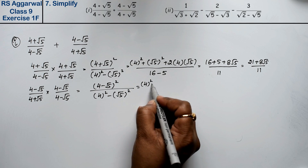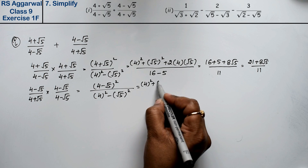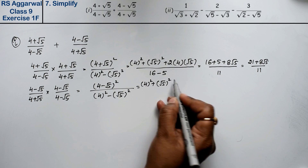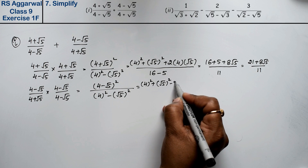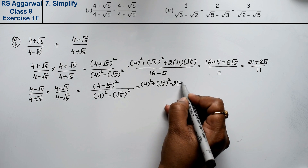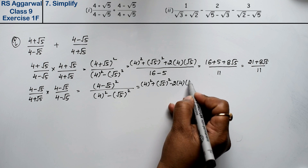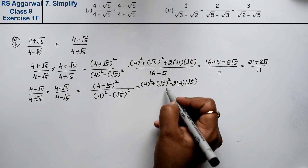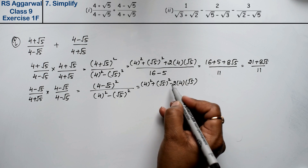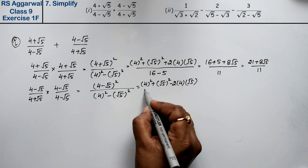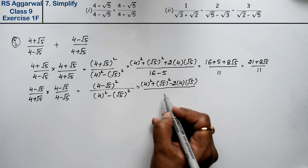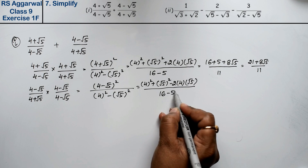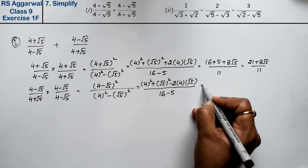The second fraction's numerator expands as a² + b² - 2ab. So: (4 - √5)² = 16 + 5 - 8√5 = 21 - 8√5, over the denominator 11.